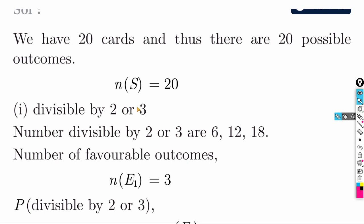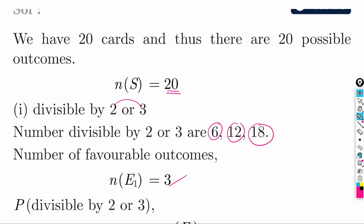The numbers which are divisible by both 2 and 3 are divisible by 6. The multiples of 6 are 6, 12, 18. So how many numbers are there? 3 numbers are there. 3 divided by total which is 20. So the answer is 3 by 20.